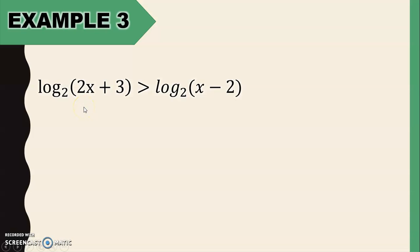we just copy the argument of the logarithm. So we have 2x plus 3, then copy the inequality symbol greater than the argument of the logarithm on the other side, which is x minus 2. Then after that, solve for x.